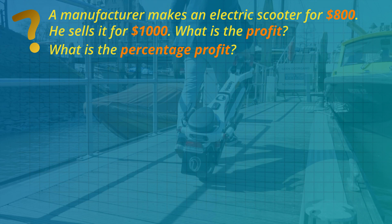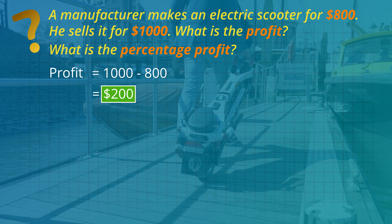A manufacturer can make this electric scooter for $800. He sells it for $1,000. What is the profit and what is the percentage profit? First let's work out the profit. 1,000 minus 800 is $200 profit.